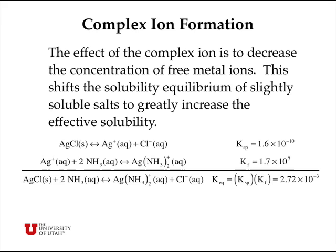We can write the normal equation for solubilization of silver chloride with its Ksp, and the equation for formation of the complex ion with its Kf. Adding these two chemical equations causes the silver ion to cancel between reactants and products, giving: silver chloride reacting with ammonia to form the complex ion plus chloride ion. The equilibrium constant for this combined reaction equals the product of the two constituent equilibrium constants — Ksp times Kf — giving an overall K of 2.72 times 10 to the minus 3.